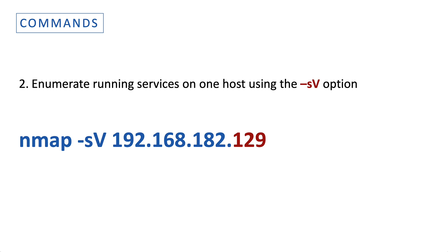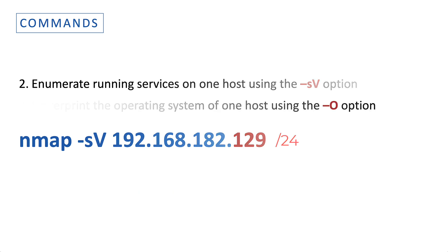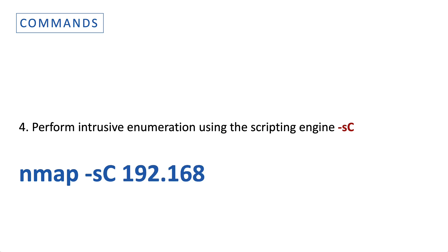You can also run the -sV command on the entire network. For a Class C network it will be slow but acceptable; however, on a Class B or Class A network this is not advisable. The same applies to fingerprinting the operating system using the -O option (capital O). This is not considered a scan type on its own. Finally, intrusive enumeration is done using the default scripting engine with the -sC option.